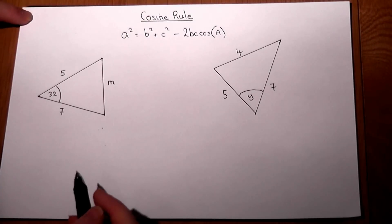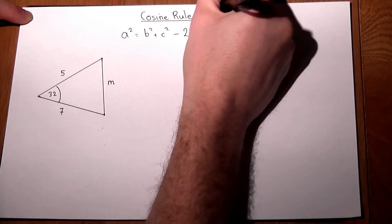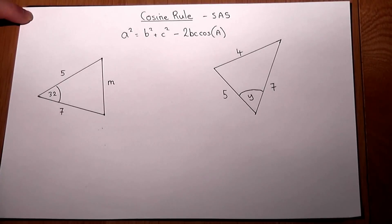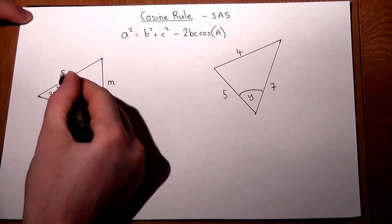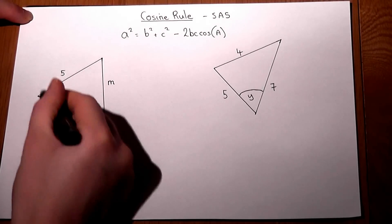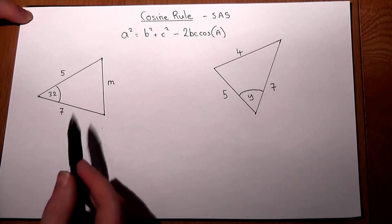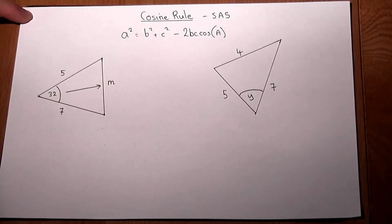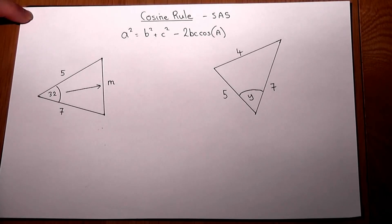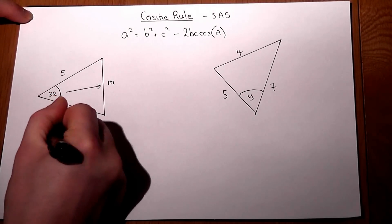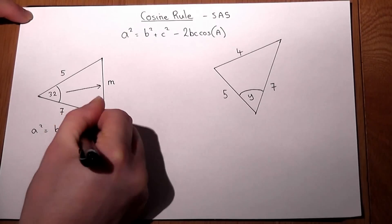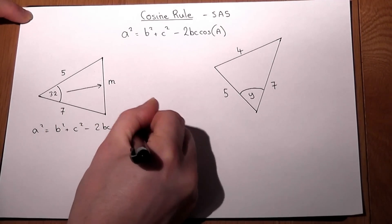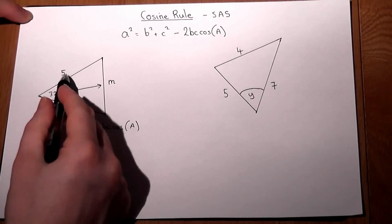I personally call the cosine rule the SAS rule. It's where we have a side, an angle, and a side in this sort of configuration, and we want to find the side opposite the angle. The rule is generally given like so, but we must adapt this rule to our given numbers and letters.